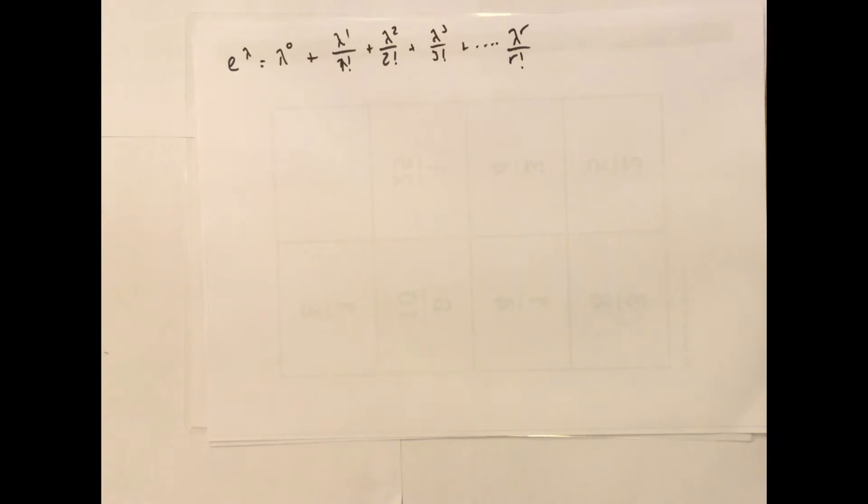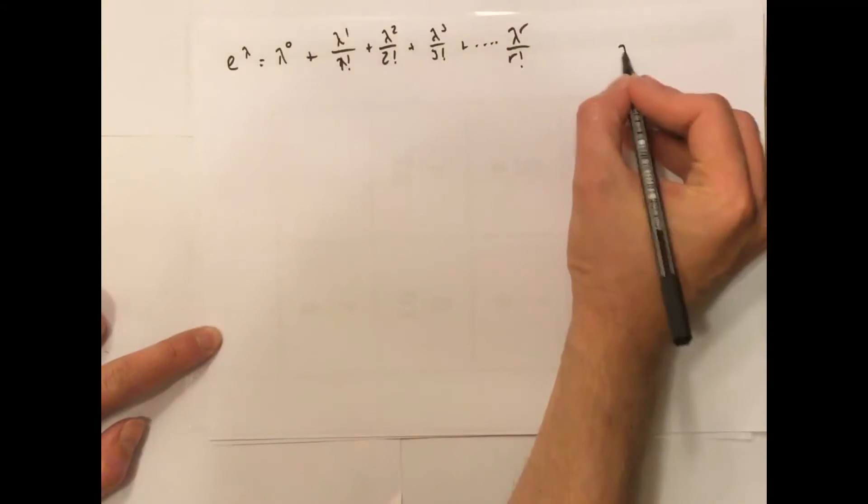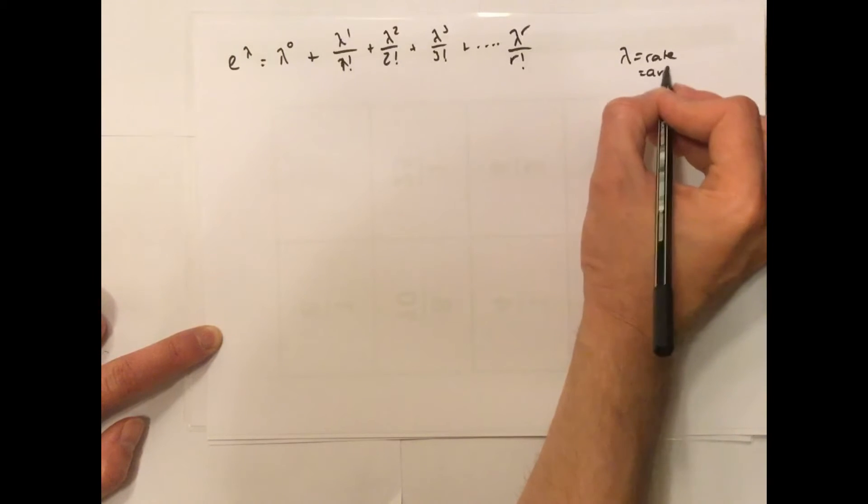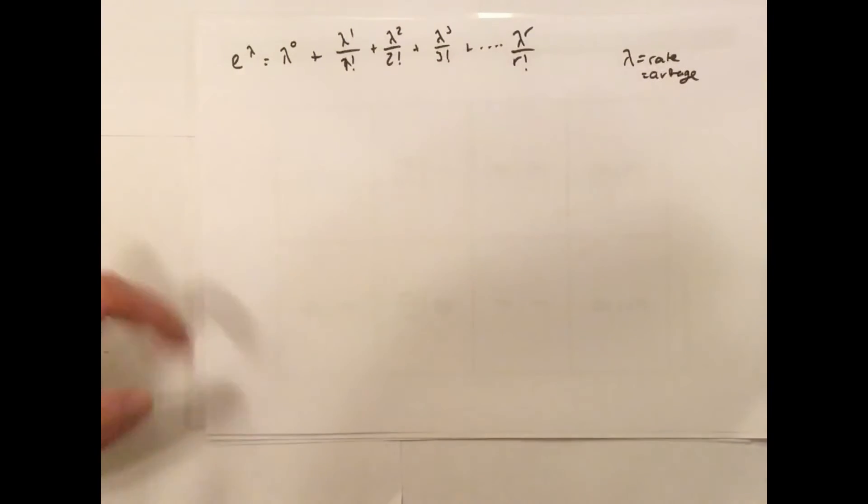So, here we're starting our model with a Poisson. Now, in a Poisson, we define lambda as the rate, the average number of occurrences. So, for example, the rate of occurrences of cases of Zika on one day in a hospital. The average number of cases.